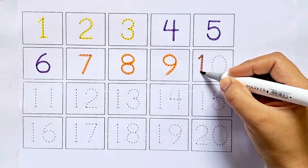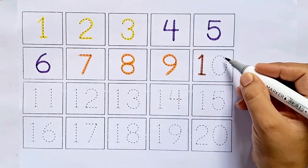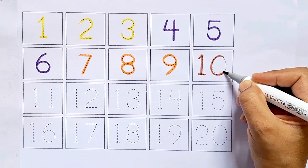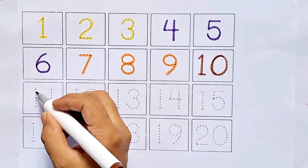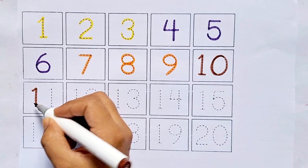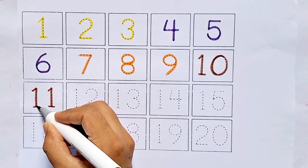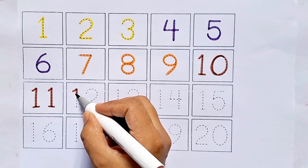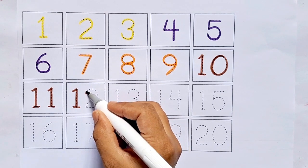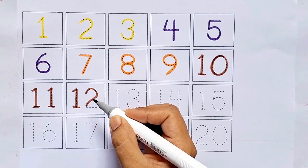Ten. This is ten. One, zero, ten. After nine comes ten. Eleven. One, one, eleven. After ten comes eleven. Twelve. One, two, twelve. After eleven comes twelve.